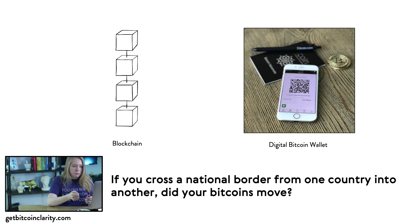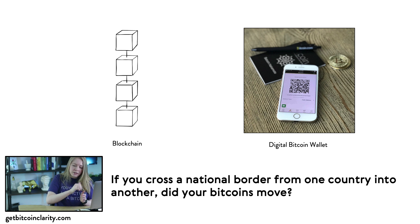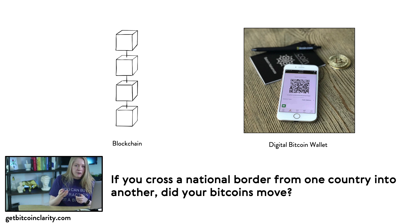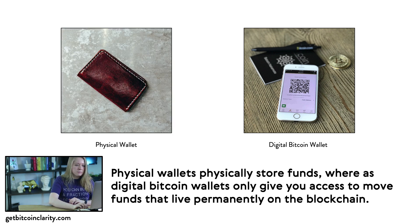Because a crypto wallet isn't holding your funds directly — it's simply access to them — imagine you were crossing a national border. Every country will ask you: 'Do you have more than ten thousand dollars in cash with you?' If you have Bitcoin keys with you, that's a very weird question, because a private key can be regenerated with just a 12- or 24-word mnemonic. Your bitcoins aren't really moving with you just because you have access to that information. It's like memorizing your credit card number — the money in your bank account doesn't move when you cross a border. Money only moves on the blockchain when you send something in a transaction.